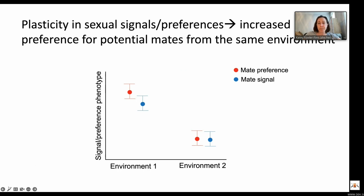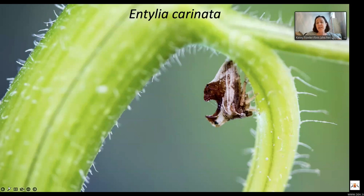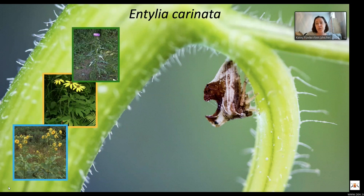We are asking questions about these different mechanisms in the keeled treehopper Antilia carinata. This is a very common treehopper in North America, distributed from Panama to Canada. It lives in prairies and a lot of fragmented habitat patches. At the focal field site, it lives on three host plant species: cup plant, coneflower, and thistle. They spend their entire lifetime on the plant, including laying eggs. The sessile juveniles develop and feed on the plant from which they hatched, and adults feed, live, sexually signal, and mate on the plant.